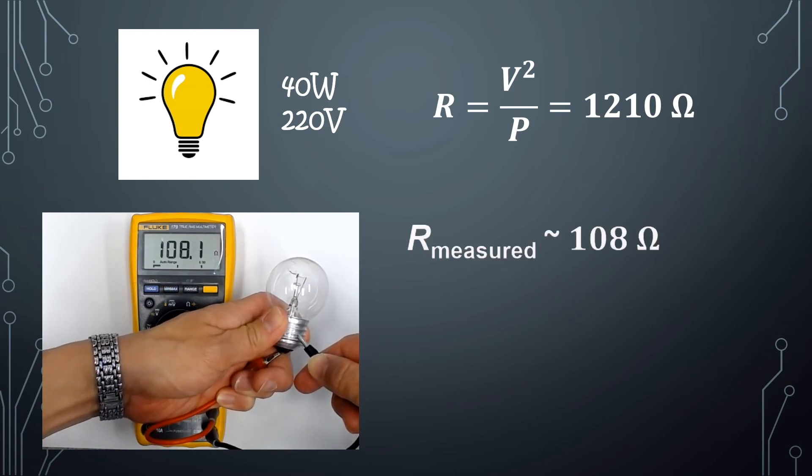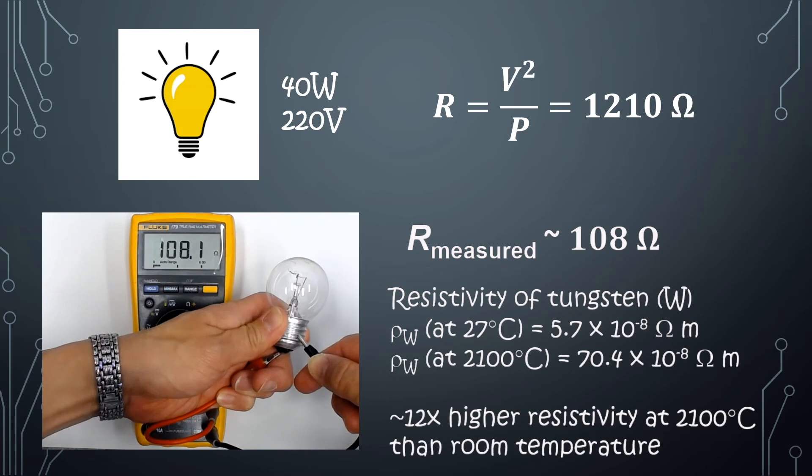This is because what we measure here is the resistance of the tungsten wire at room temperature. But when the light bulb is turned on, the tungsten wire heats up, and the resistivity increases by 12 times, going from room temperature to about 2100 degrees Celsius.